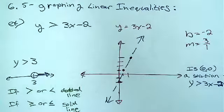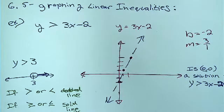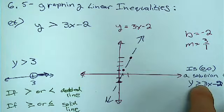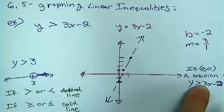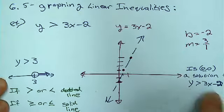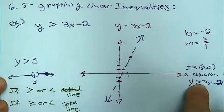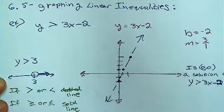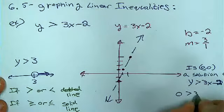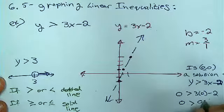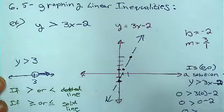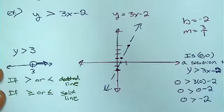Does 0, 0 make that a true statement? Because if it's a solution, it makes it true. So does 0, 0 do that here? How do you check to see if an ordered pair is a solution to an equation? You're supposed to plug it in. Is 0 greater than 3 times 0 minus 2? Is 0 greater than 0 minus 2, 0 greater than negative 2? Is that a true statement? Yes.